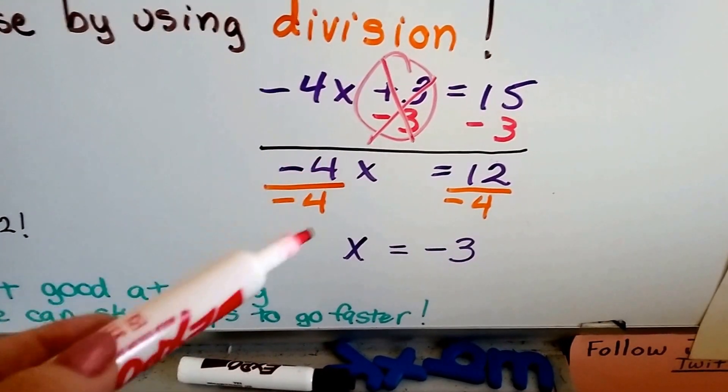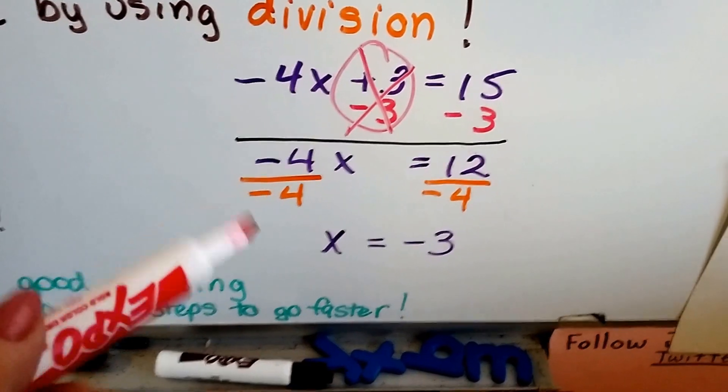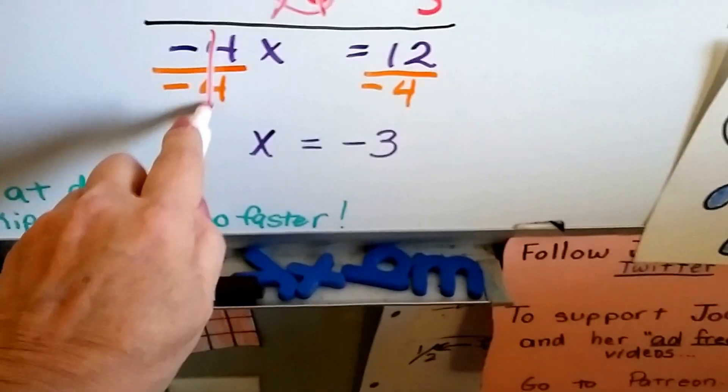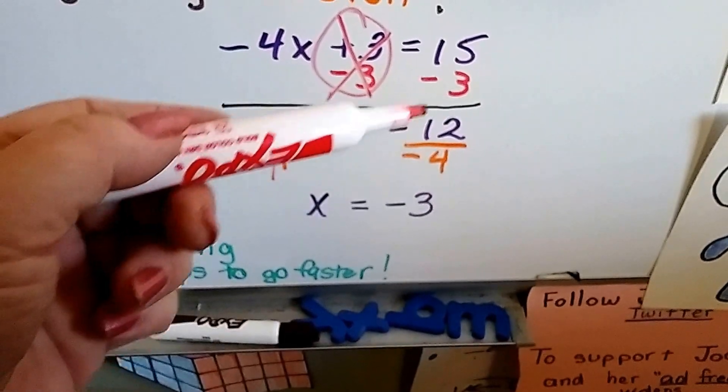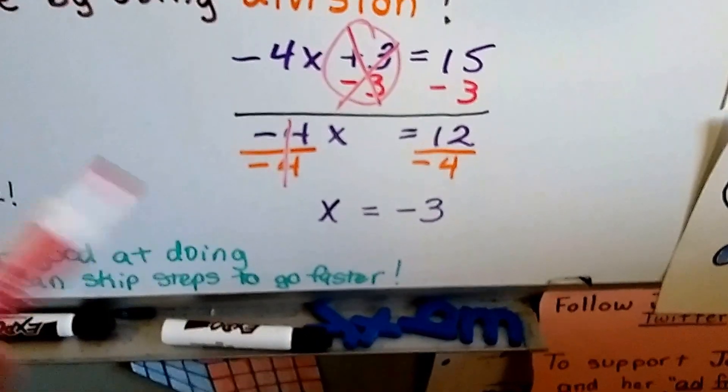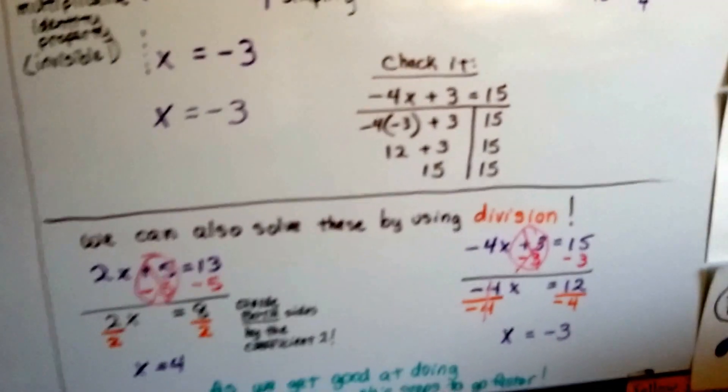So we divide both sides by negative 4 and this becomes our buddy, the invisible 1, because the numerator and denominator is the same. And 12 divided by negative 4 is negative 3. We get negative 3, just like we did up there.